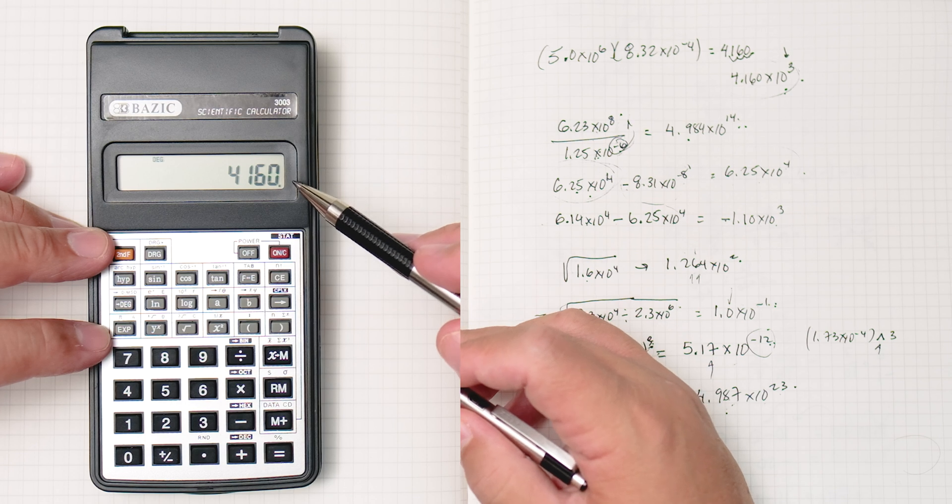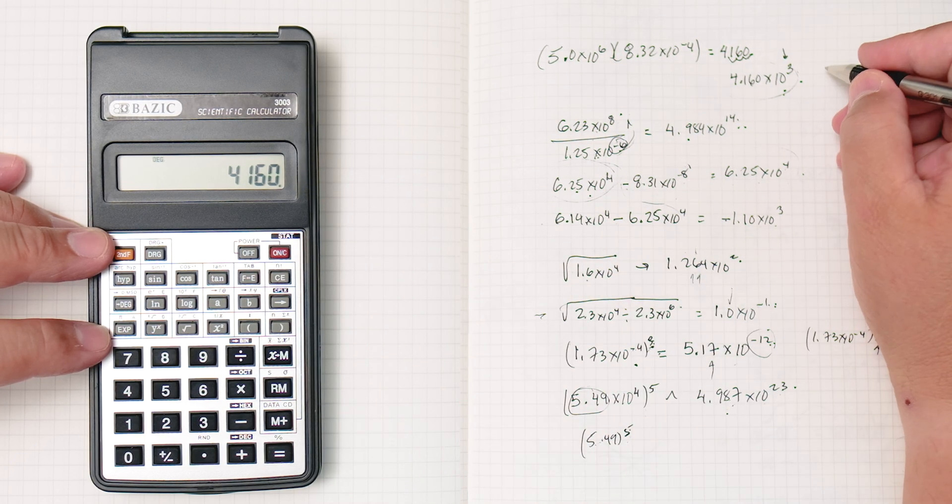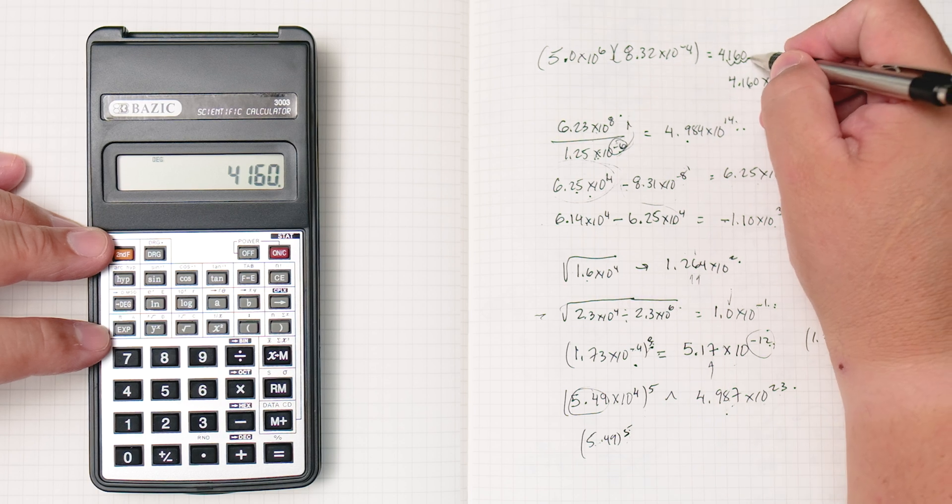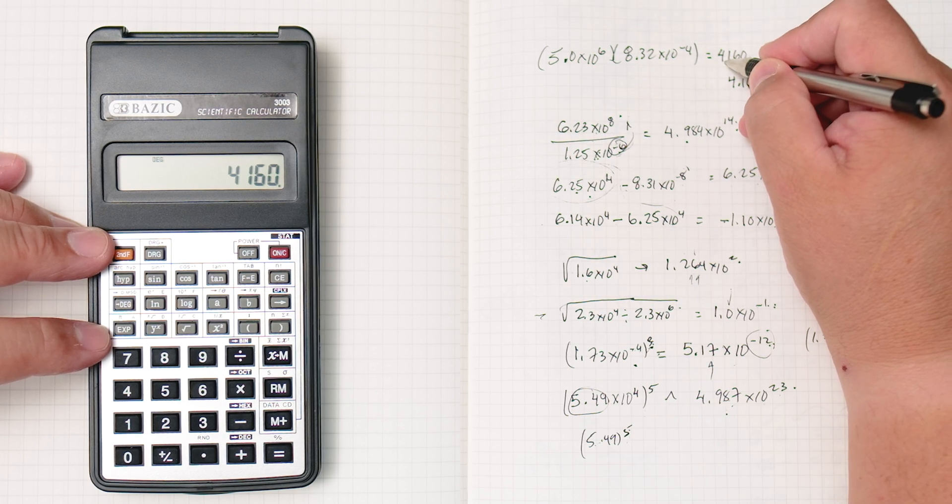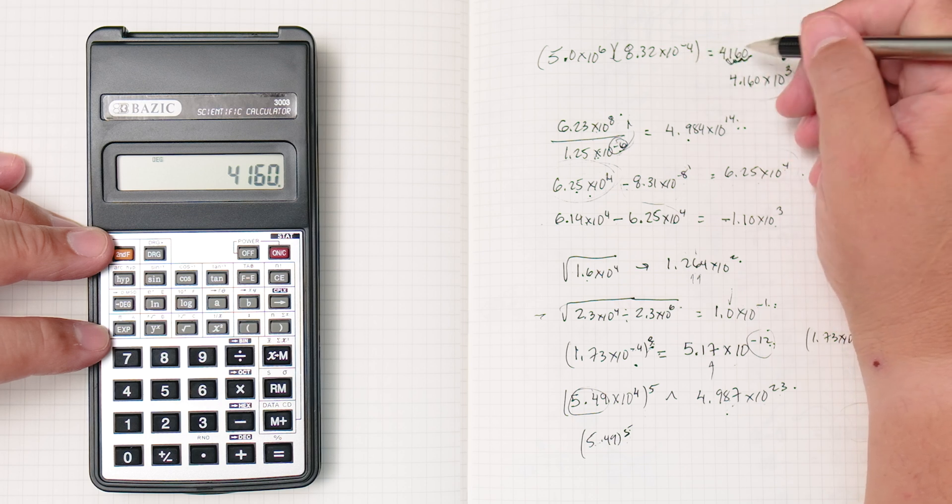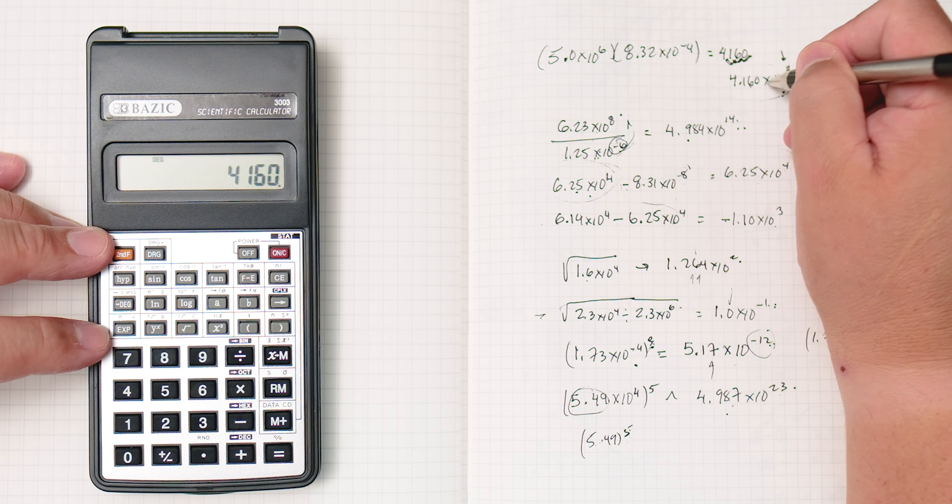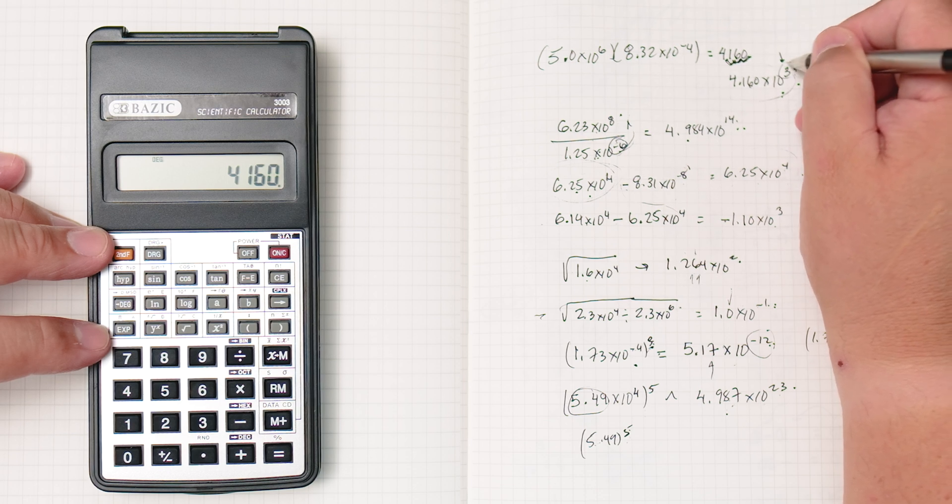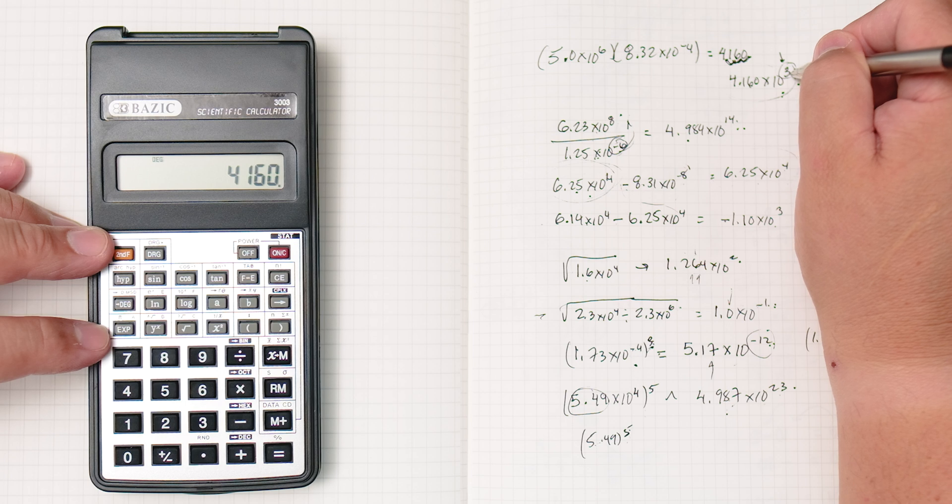This calculator doesn't have a different mode for scientific mode. You're going to have to do it by hand, right? So the decimals here, you go 1, 2, 3, you're making this number smaller. 1, 2, 3, which is 4.160 times 10 to the 3rd, so you're going to make this bigger. You're making this number smaller, you're going to make the exponent bigger.